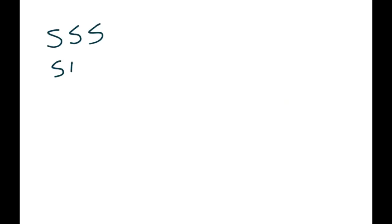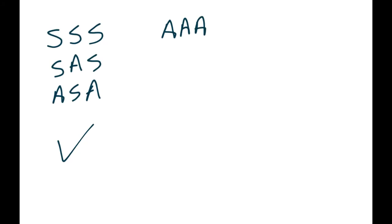To summarize congruent triangles: there are three cases that work — Side-Side-Side, Side-Angle-Side, and Angle-Side-Angle. The two that don't work are Angle-Angle-Angle (similar but not congruent — just scaled up) and Angle-Side-Side. That last one even spells ASS, which is an easy way to remember that it doesn't work. And that's it.